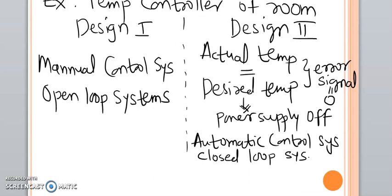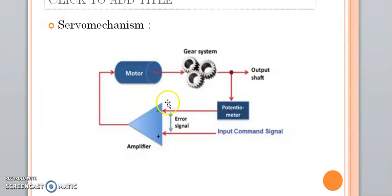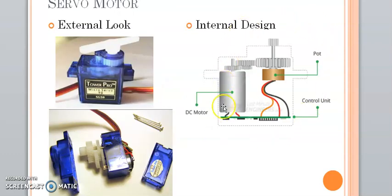Looking at this diagram, this is the external appearance of the SG90 servo motor, and this is its internal design. Before discussing that, we will cover the servo mechanism so you can relate it to the closed loop control system. Basically, the servo motor consists of four components: a DC motor, a potentiometer, a gear arrangement, and intelligent circuitry — to rotate the servo motor to a desired angle. In the internal design diagram you can see the DC motor and the gear arrangement.